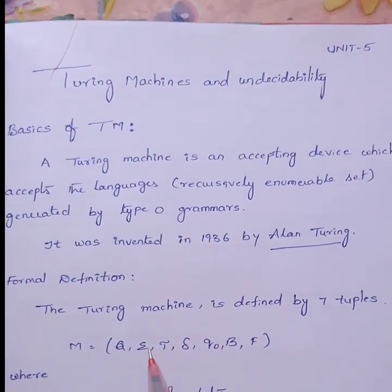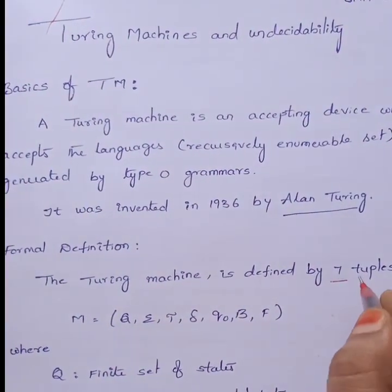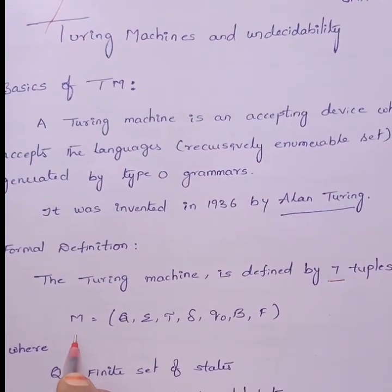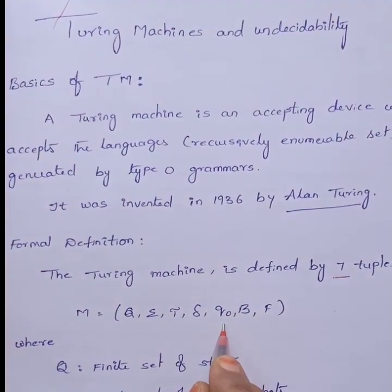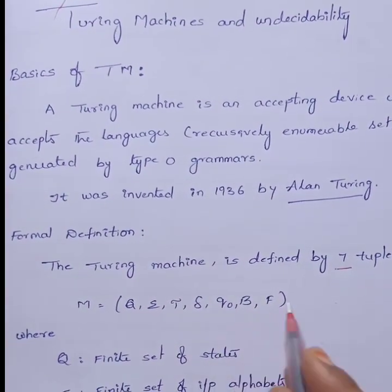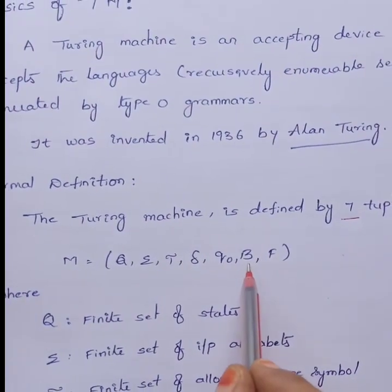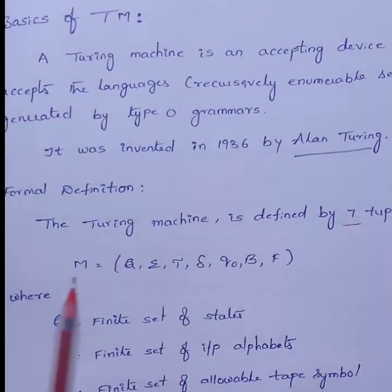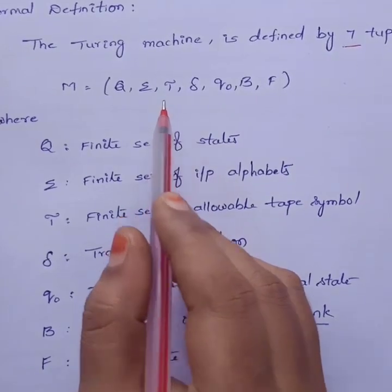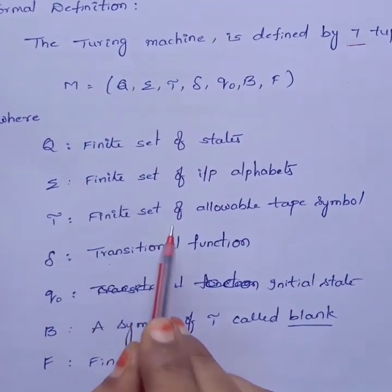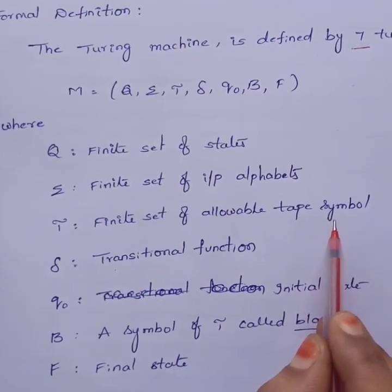Coming to the formal definition, a Turing Machine is defined by 7 tuples, indicated as M = (Q, Σ, Γ, δ, Q₀, B, F). Similarly, in Pushdown Automata we also have 7 tuples, but instead of B we have Z₀. Γ is the same, but in Pushdown Automata Γ indicates the stack elements. Here, Γ is a finite set of allowable tape symbols, and there is a tape connected to the control unit.